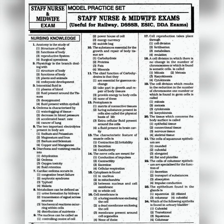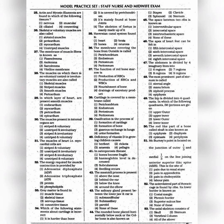Question 21: The cells of squamous epithelium are — the answer is option 4: Flat and plate-like. Question 22: The cells of columnar epithelium are specialized for the function of — the answer is option 3: Absorption. Question 23: The epithelium found in glands is — the answer is option 4: Cuboidal. Question 24: The epithelium found in the urinary bladder is — the answer is option 2: Transitional.